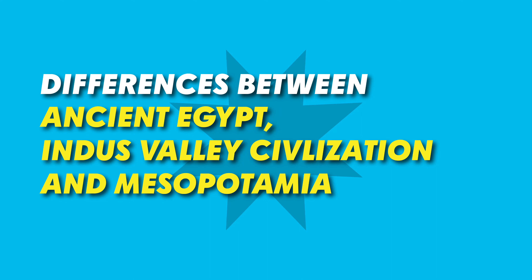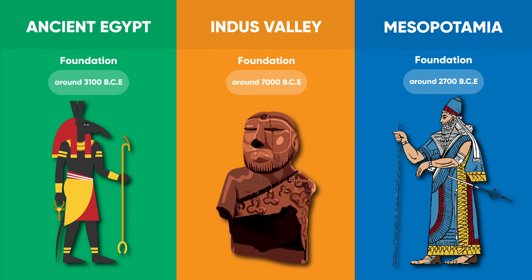In this video, we will discuss the differences between the three oldest civilizations in the world. The foundation of ancient Egypt was set around 3,100 BC. For Indus Valley, it was around 7,000 BC, and Indus Valley civilization is also considered one of the oldest civilizations in the world. The foundation for Mesopotamia was set around 2,700 BC.